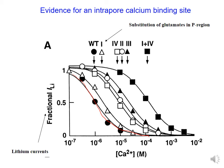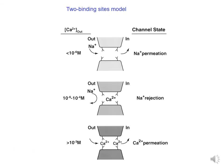This binding site has an affinity close to one micromolar under these conditions. With successive mutations of glutamates, the affinity for calcium decreases, as reflected by the shift to the right in the concentration-current curves. We can now put everything together in a model in which calcium channels have two binding sites for calcium in the pore region. These binding sites are formed by the side chains of the glutamate residues. At very low levels of extracellular calcium, the binding sites are not occupied, so all ions such as sodium can go through the pore.